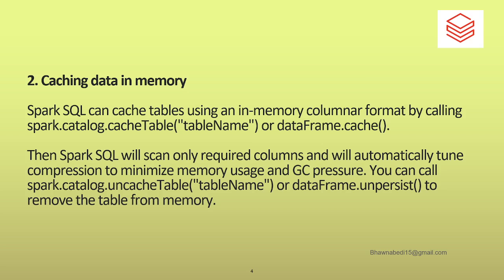Point number two says: cache data in memory. Try caching data in memory wherever possible. If you have a DataFrame that you know will be used again and again across your whole code, go ahead and cache that particular DataFrame. You can cache it using DataFrame.cache(), or you can also use spark.catalog.cacheTable() to cache a particular Spark table.